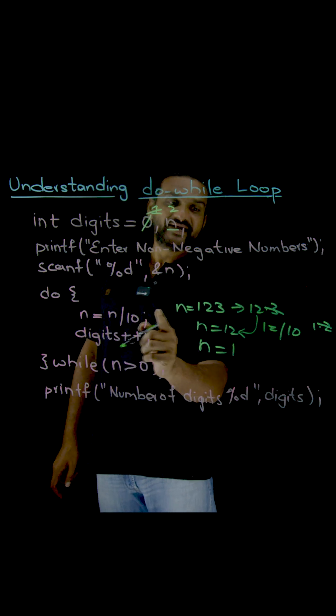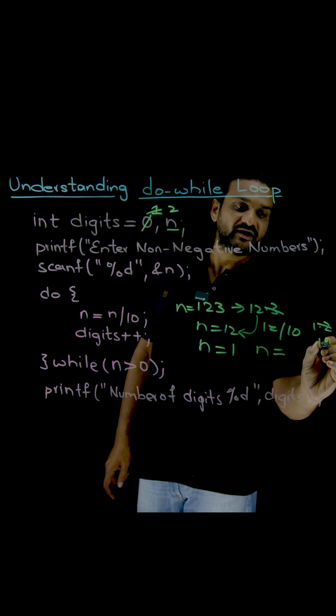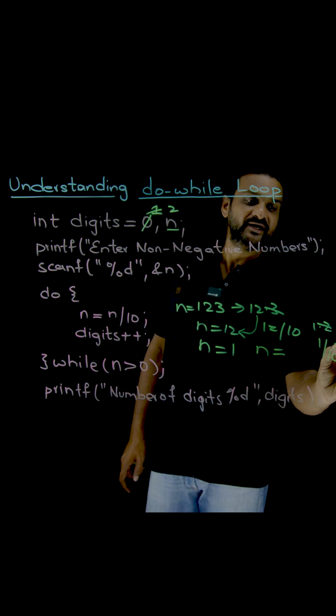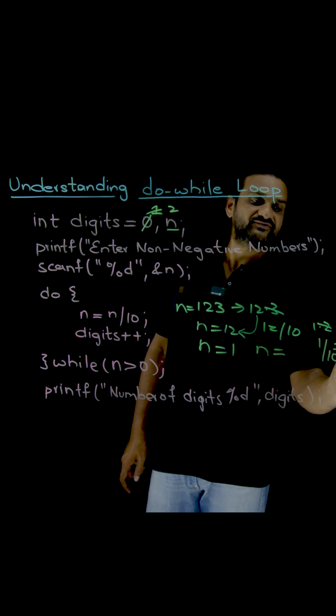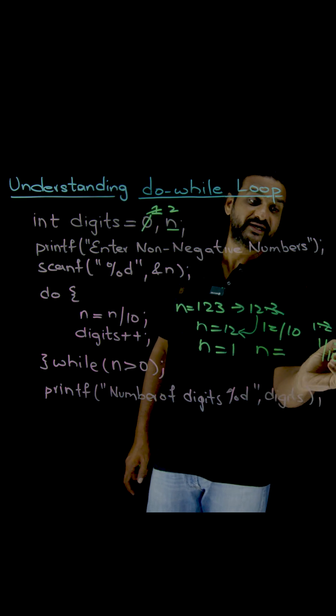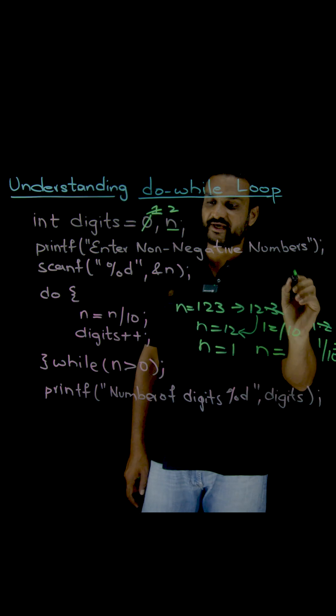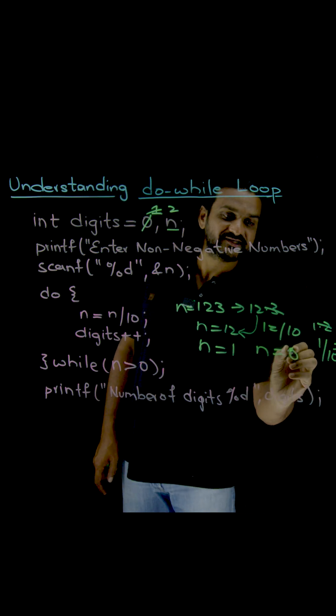Now 1 by 10. So here the new value of n is equal to, whenever 1 by 10 gets executed it is 0.1. This one will get discarded. So the final value, the division value of 1 by 10 is going to produce an outcome of 0. So the new value of n is 0.